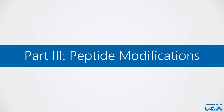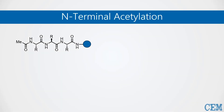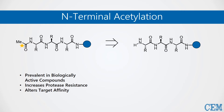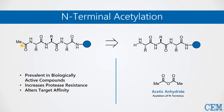Let's take a look at this webinar's final part: peptide modifications. First up is N-terminal acetylation, which is a widespread modification among eukaryotes and prokaryotes alike. It alters the charge and hydrophobicity of the peptide, affecting its folding properties and target affinity, and can also increase protease resistance. Automated N-terminal acetylation is simple: upon Fmoc deprotection of the N-terminus, the free amine is subjected to 10% acetic anhydride at 65 degrees Celsius for just two minutes.